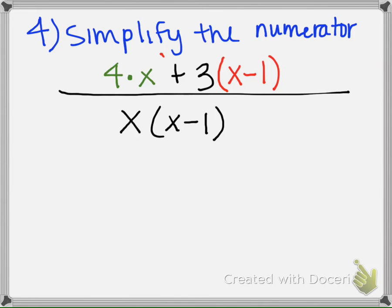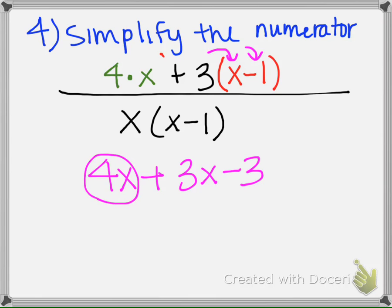Okay, so now we need to simplify. We're going to distribute here. 4 times x is just 4x, minus like terms.